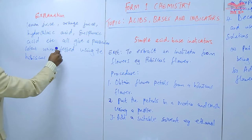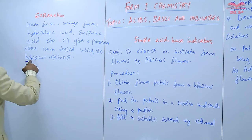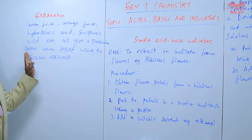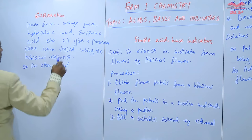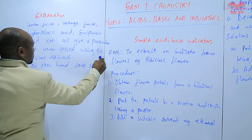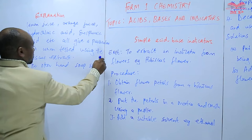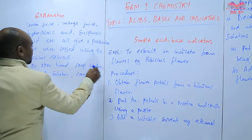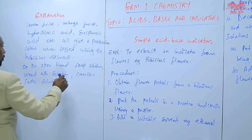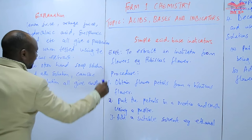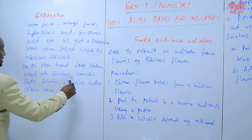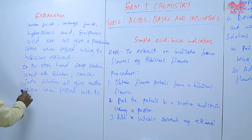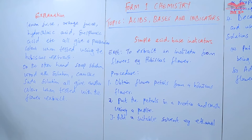All of them will give a specific color — let's say, for example, color red. When they all give the same color, it means that all of them have the same properties, so all of them are acidic. On the other hand, we can have soap solution, wood ash solution, and caustic soda solution — these ones give another color when tested with the flower extract, which indicates that they are bases.